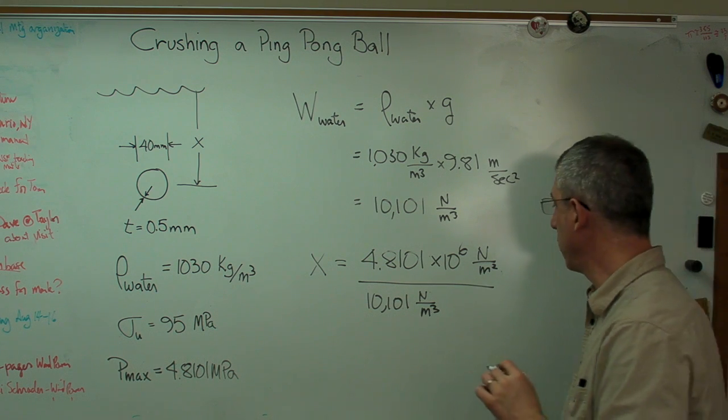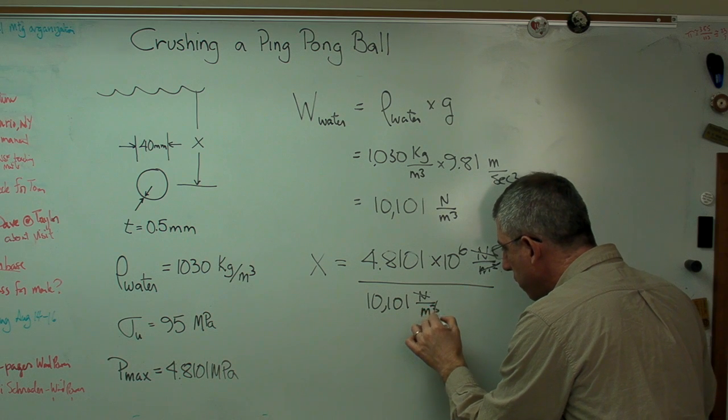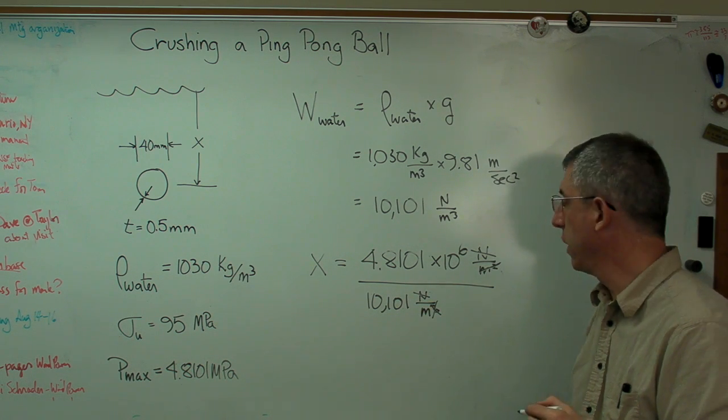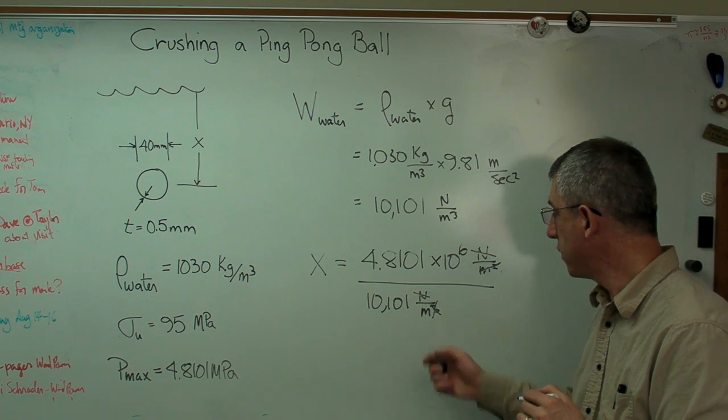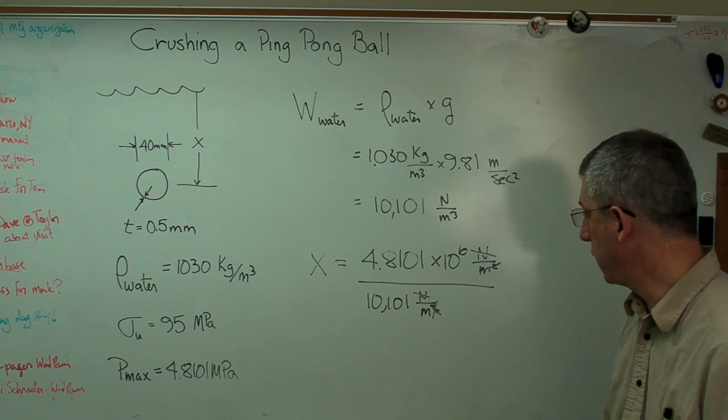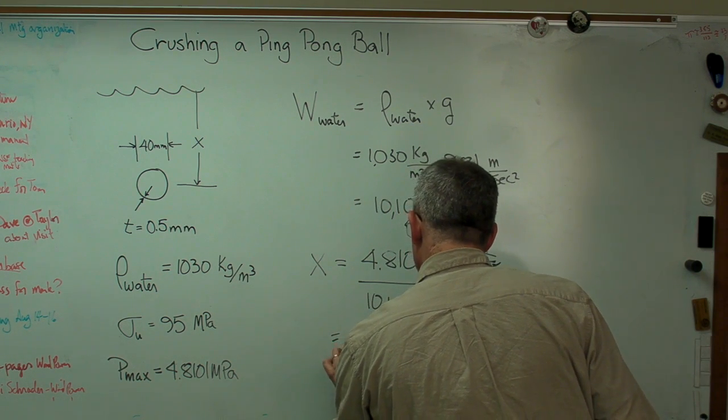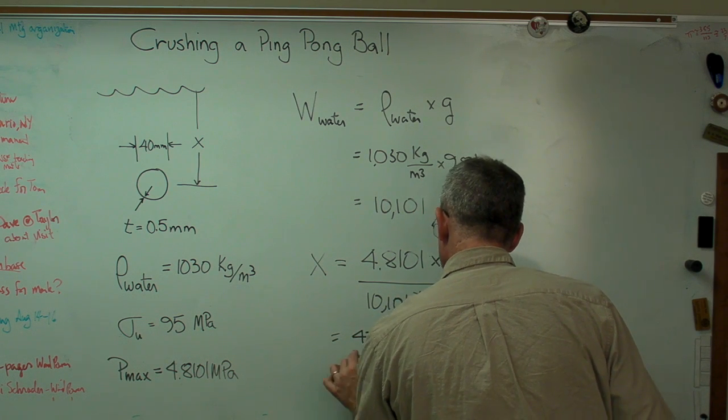Now let's take a second and look at the units here. Newtons cancel out. Meter squared cancels out with that cube right there. And I'm left with one over meters in the denominator. Well, that's going to be the same as putting meters in the numerator. That's the unit I'm looking for. So this makes sense. And when I work this out, I get 476.2 meters.